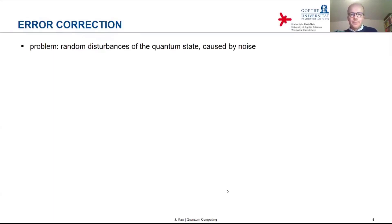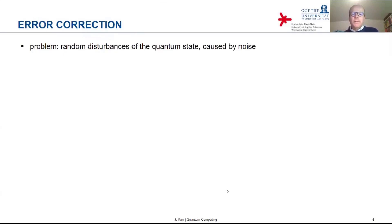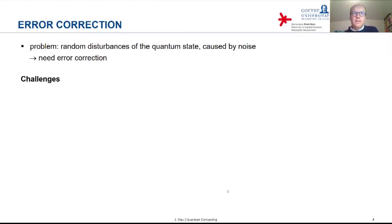You would like to do something similar in a quantum computer: while the qubit travels through the circuit it can be disturbed, and you want to add redundancy in some form that allows you to reconstruct the correct quantum state if the qubit was disturbed. However, this is complicated by a number of challenges which are peculiar to quantum physics and which you don't have in the classical case.